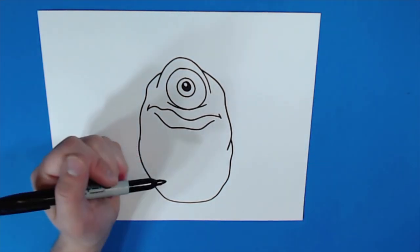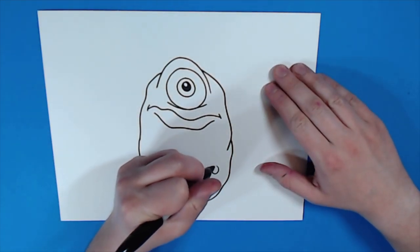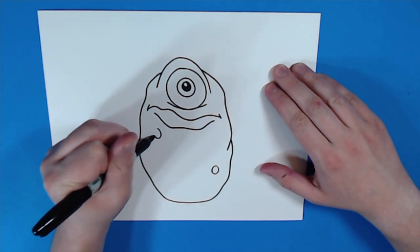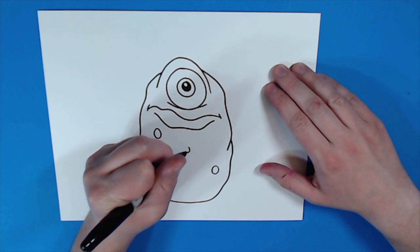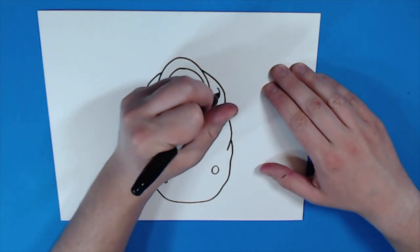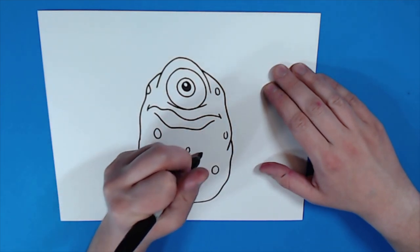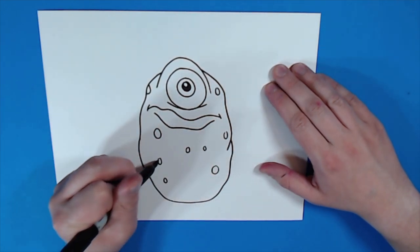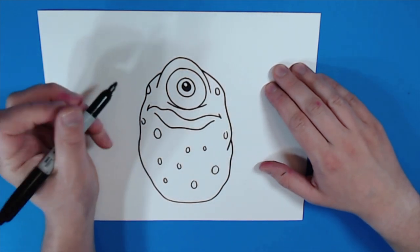Now, because this is a potato, we have to give it spots. So, I'm going to draw some different spots onto my potato. And I'm going to make these spots different sizes. You can put some, just like these half spots on here. And put these spots all over your potato.